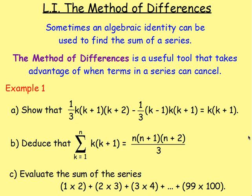Example 1: Part A showed that one third of k(k+1)(k+2) minus one third of (k-1)k(k+1) equals k(k+1). Part B: deduce that the sum of k(k+1) from k equals 1 up to n is equal to n(n+1)(n+2) all over 3. Part C: evaluate the sum of the series 1×2 plus 2×3 plus 3×4 plus dot dot dot plus 99×100.